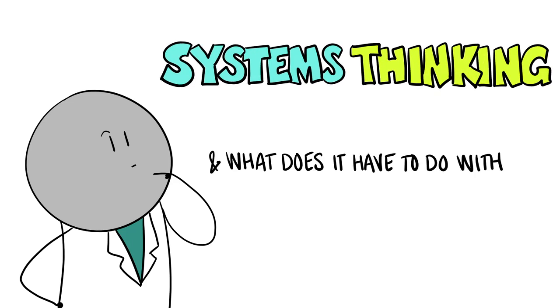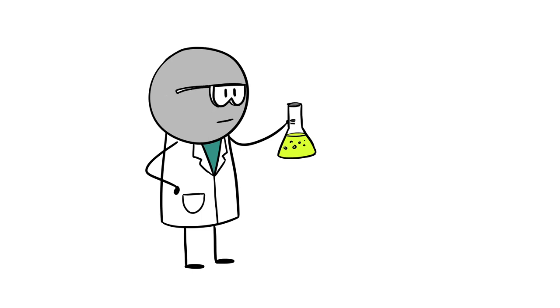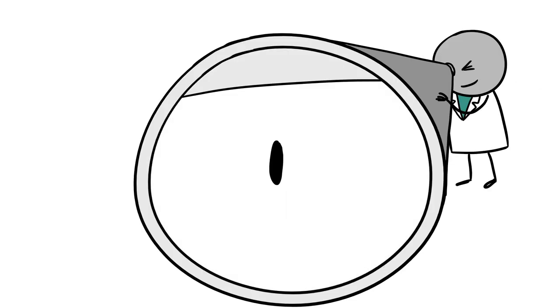Not sure what systems thinking is and what it has to do with green chemistry? Systems thinking asks you to look around and beyond the thing you're trying to make, to use a wider lens.